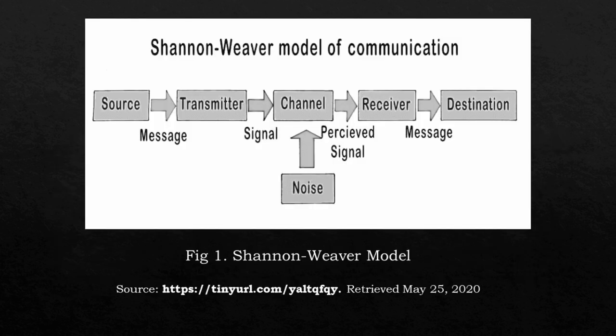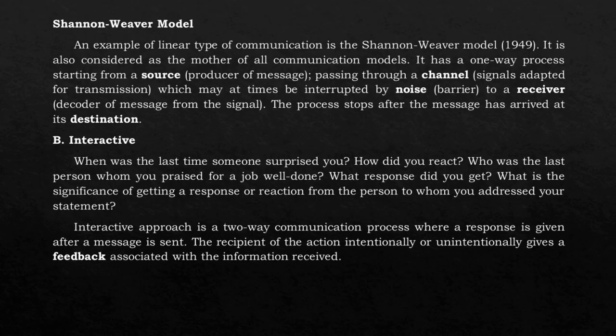Shannon-Weaver Model of Communication. The elements are: Source, Transmitter, Channel, Receiver, Destination, Message, Signal, Perceived Signal, Message, and Noise. The Shannon-Weaver Model (1949) is an example of linear communication and is considered the mother of all communication models. It has a one-way process starting from a source — the producer of the message — passing through a channel with signals adapted for transmission, which may at times be interrupted by noise, to a receiver who decodes the message from the signal. The process stops after the message has arrived at its destination.